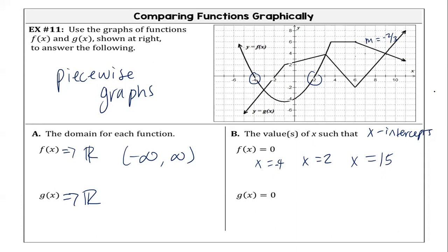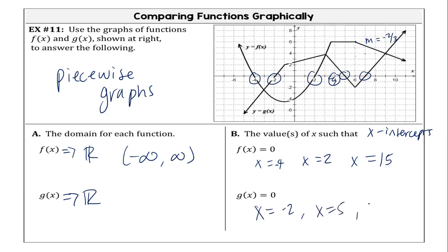Because the arrow tells us that it goes on forever, it keeps going down, so this is going to have to cross the x-axis at least one more time. Whereas g of x, the x-intercepts are just what you see, because the arrows are no longer going to cross our x-axis. You could either keep counting out your slope going down two and over three, or actually find the equation of the line and plug it in. So we have x equals negative two, x equals five, and x equals seven.